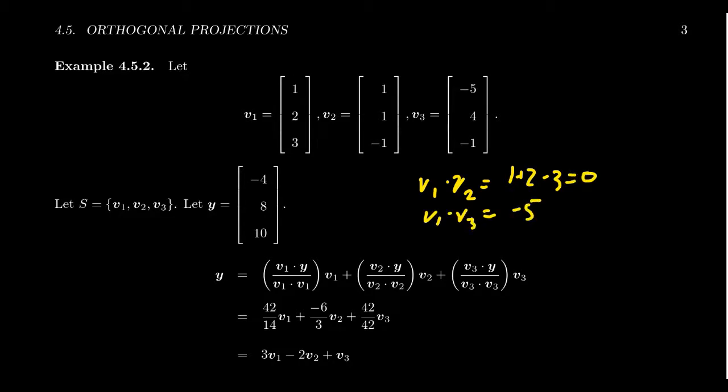And lastly, V2 dot V3 is equal to negative 5 plus 4 plus 1, which is equal to zero. This is an orthogonal set.